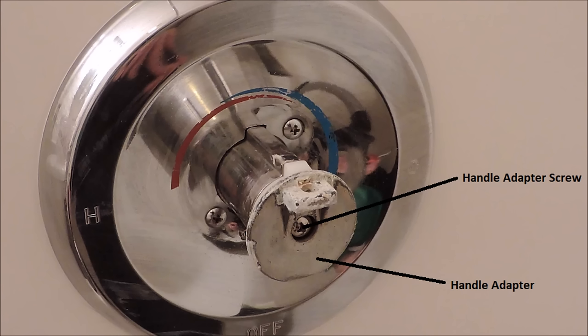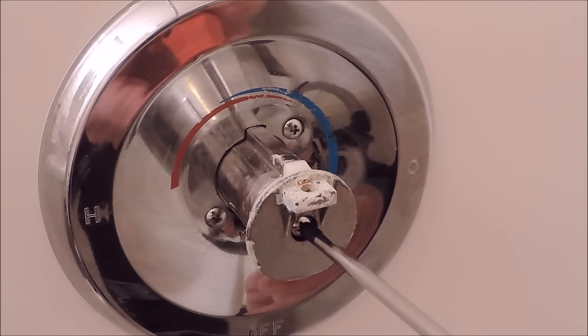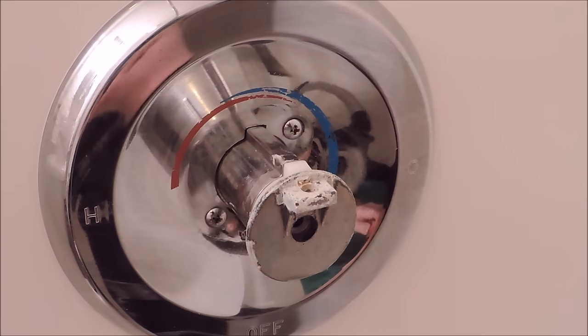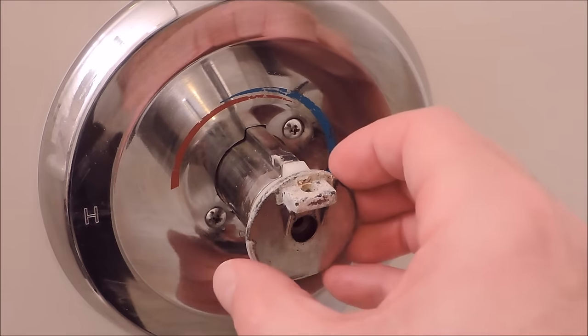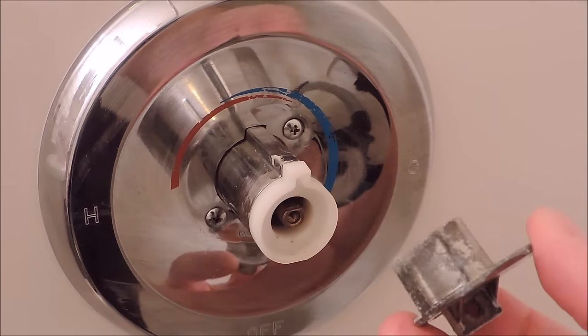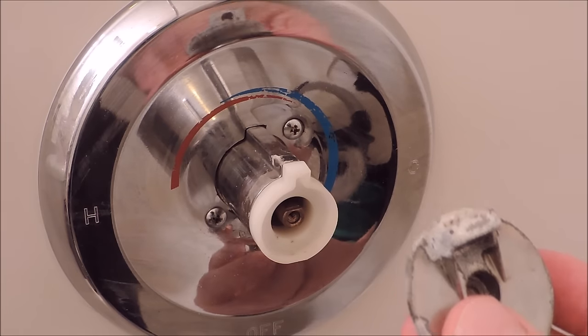Now you see the handle adapter screw and the handle adapter. So, following the rule lefty-loosey, let's remove the screw and be sure when you remove this handle adapter, you can see the protrusion on the top and the little flange on the right hand side. Be sure you put it back the same way you took it off.